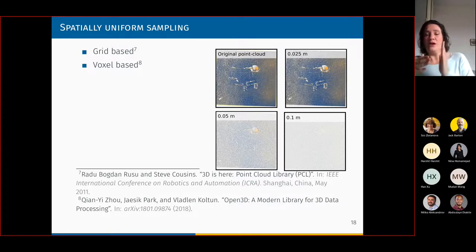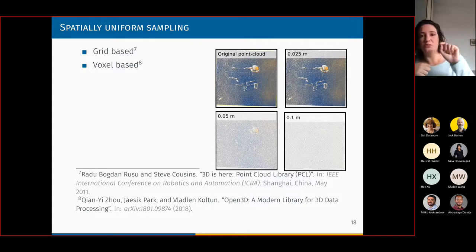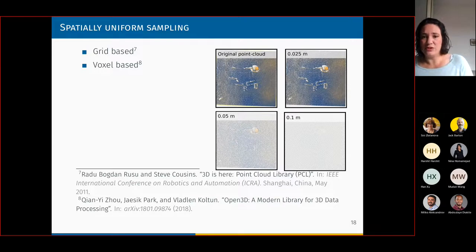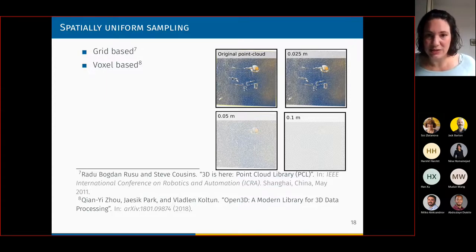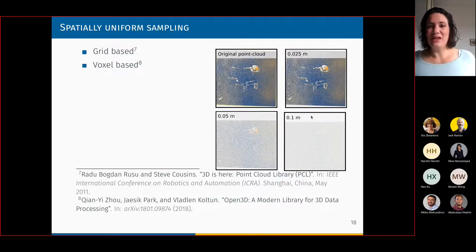Another approach was to use directly the points. The most common ones are grid-based and voxel-based, where they divide the data into uniform cells and take one point from each cell. You can see in the example that after a while, at five centimeters, we just lose everything. We can hardly notice the small structures that we are looking for — you will see it better when I show our saliency-based approach.